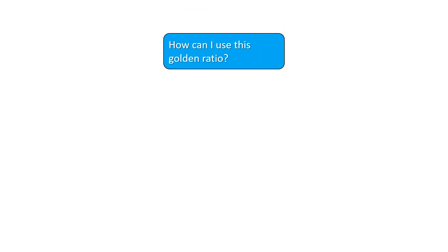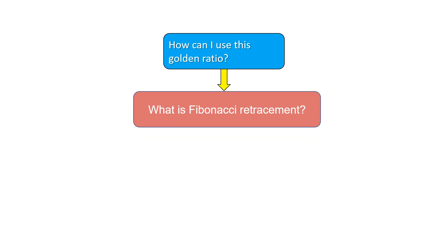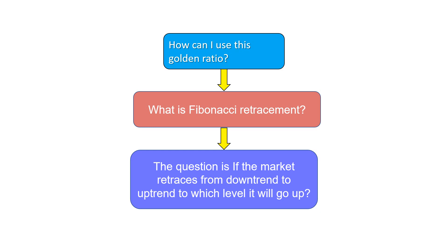How can you use this golden ratio? Before I answer that, what is Fibonacci retracement? In the stock market, when the trend is going downward and suddenly the trend reverses its direction, it's called a retracement. Or when the trend is going upward and suddenly goes downward, that price action is also called a retracement. The question is: if the market retraces from downtrend to uptrend or vice versa, to which level will it go? That is where the Fibonacci levels come into the picture.